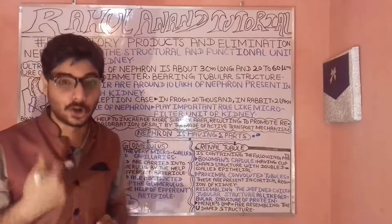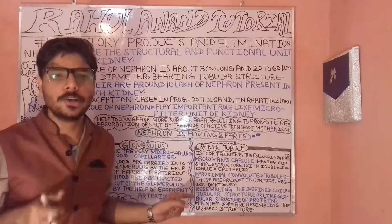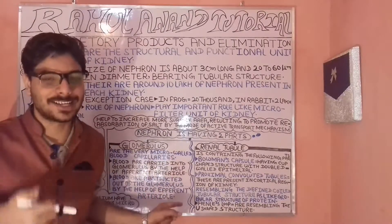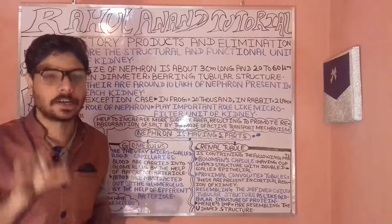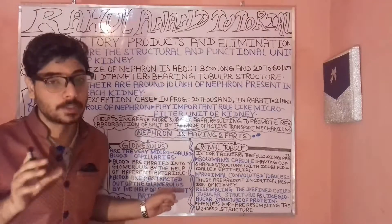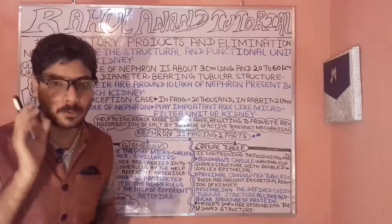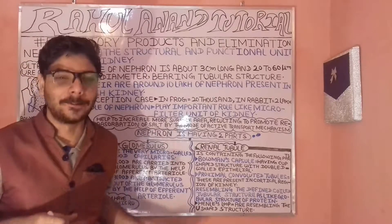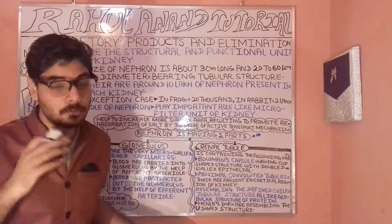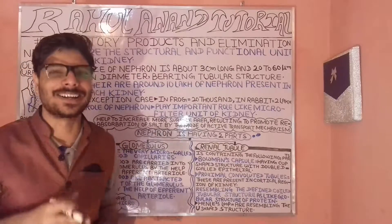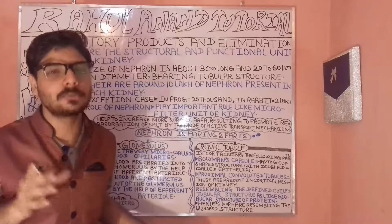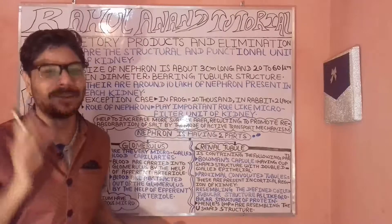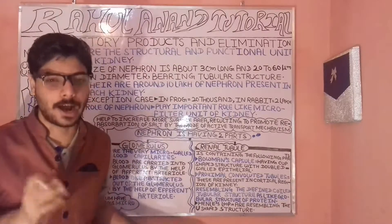Regarding the glomerulus: blood is carried into the glomerulus by the afferent arterioles. When blood is taken out from the glomerulus, it exits through what are called the efferent arterioles.